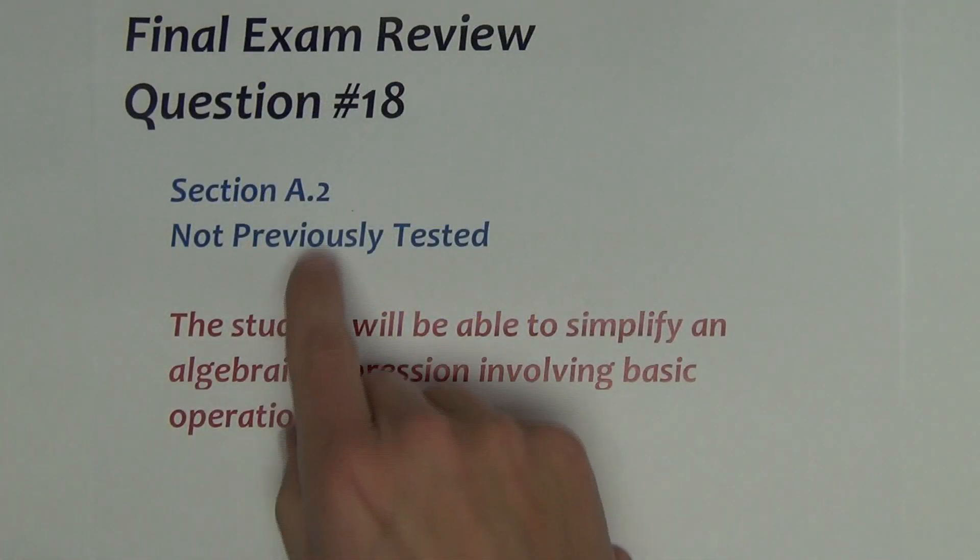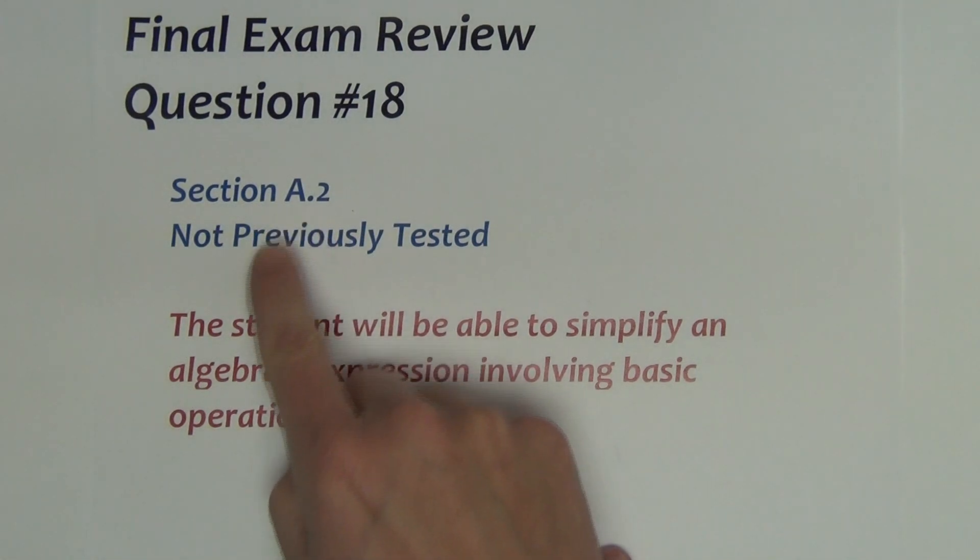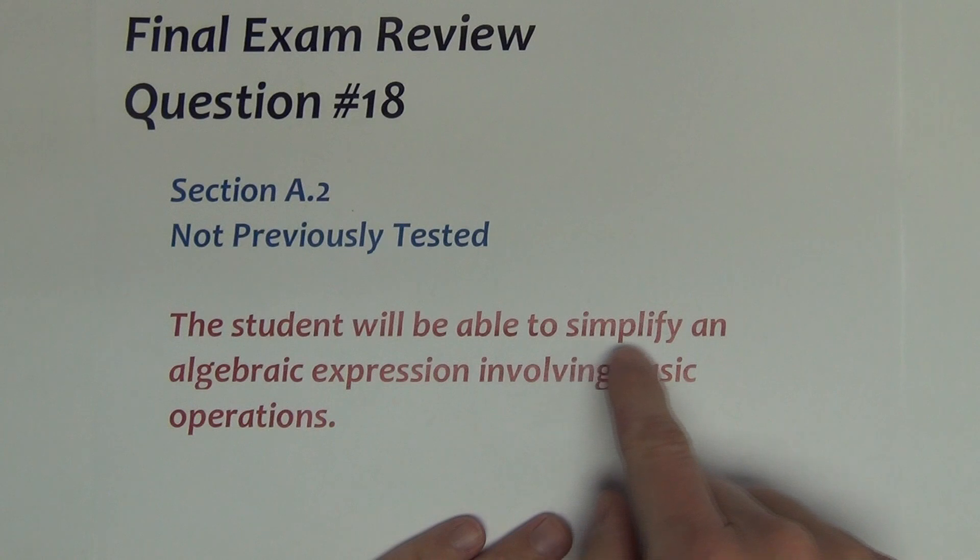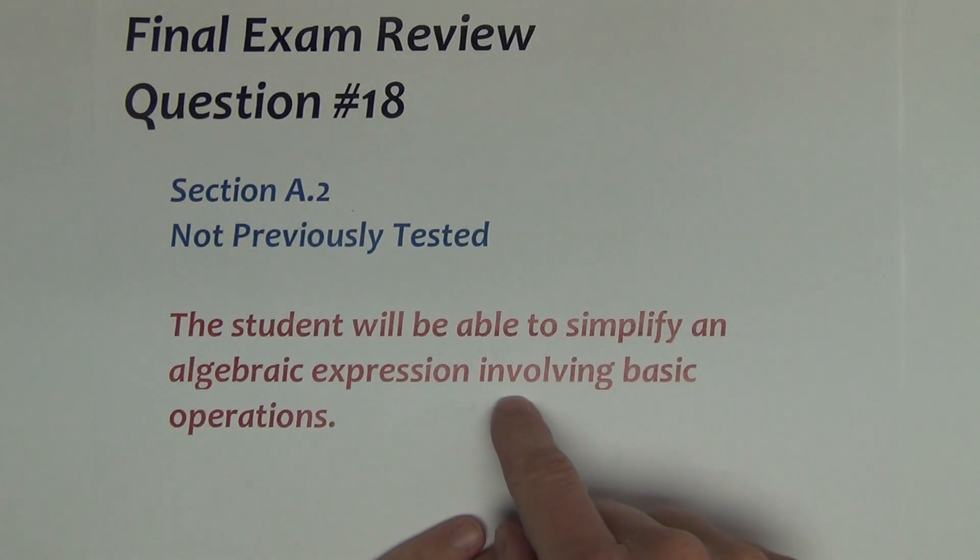Question number 18 on the final exam comes from section A.2. It has not previously been tested. This question will test whether you can simplify algebraic expressions involving basic operations, like addition, subtraction, multiplication. So this type of example should seem pretty easy to you, as this dates as far back as algebra 1, kind of basic algebra content.